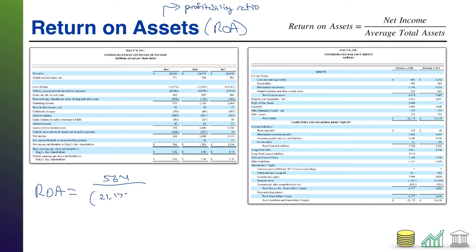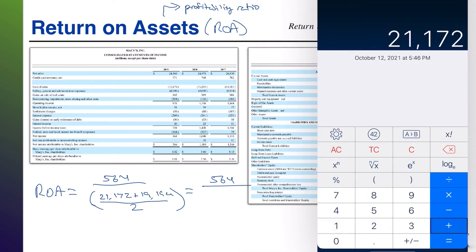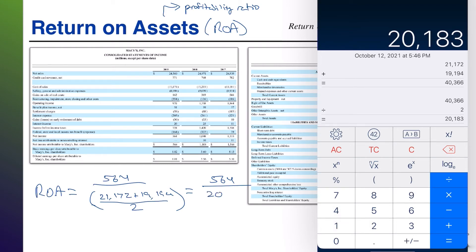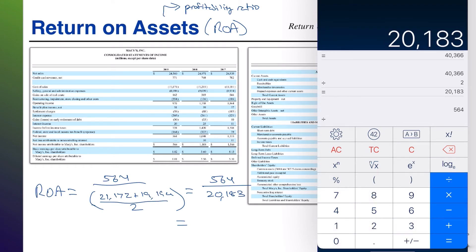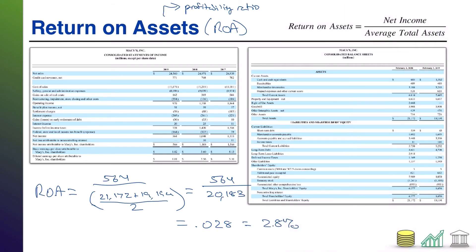So I'm going to do 21,172 plus 19,194, all divided by two. Pulling out my calculator: 21,172 plus 19,194 equals, divided by two — my average total assets are 20,183. Now solving: 564 divided by 20,183 works out to approximately 0.028, so we'll say 2.8%.